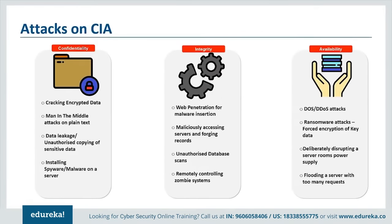First is confidentiality — roughly equivalent to privacy. Measures undertaken to ensure confidentiality are designed to prevent sensitive information from reaching the wrong people while making sure the right people can access it. Access must be restricted to those authorized to view the data. It is common for data to be categorized according to the amount and type of damage that could be done if it falls into unintended hands. Training can help familiarize authorized people with risk factors, strong password best practices, and information about social engineering methods.